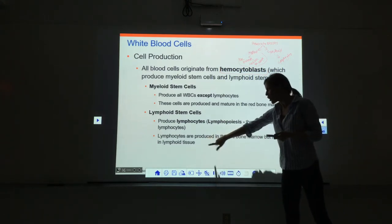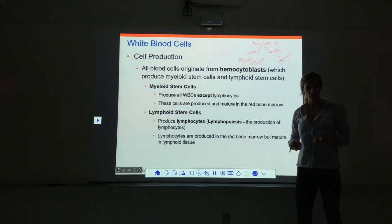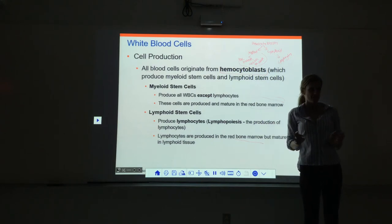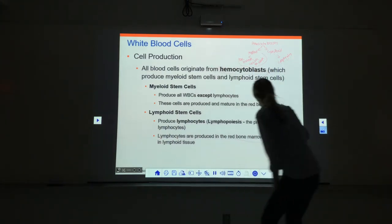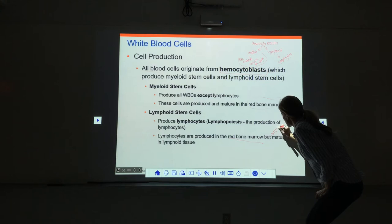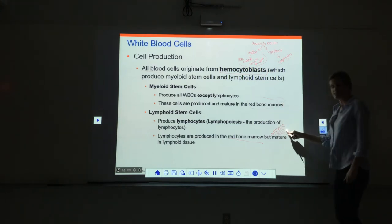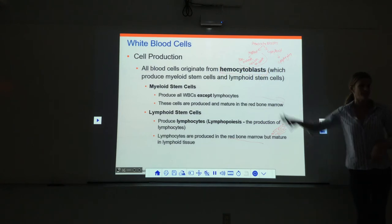Lymphocytes are all produced in the red bone marrow — so the production of all lymphocytes starts in the red bone marrow just like everything else. However, not all lymphocytes mature there. T cells do not mature in the red bone marrow. B cells and NK cells stay in the bone marrow — they're made and matured there — but T cells are different.